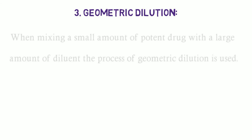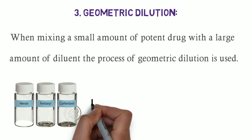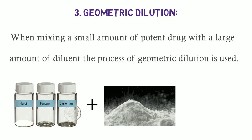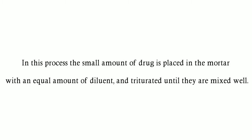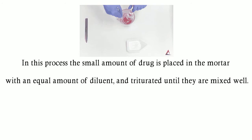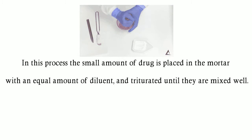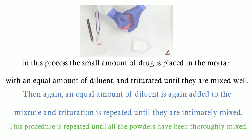When mixing a small amount of potent drug with a large amount of diluent, the process of geometric dilution is used. In this process, the small amount of drug is placed in the mortar with an equal amount of diluent and triturated until they are mixed well. Then, an equal amount of diluent is again added to the mixture and trituration is repeated until they are intimately mixed. This procedure is repeated until all the powders have been thoroughly mixed.